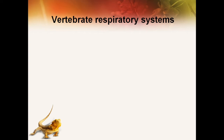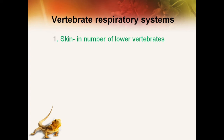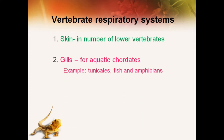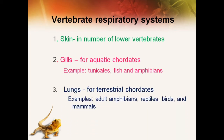Vertebrate respiratory systems vary depending upon their habitat. In a number of lower vertebrates, respiration takes place by the skin. In aquatic vertebrates, respiration takes place by the gills — for example, tunicates, fish and amphibians. In terrestrial vertebrates, respiration takes place by lungs — for example, adult amphibians, reptiles, birds and mammals.